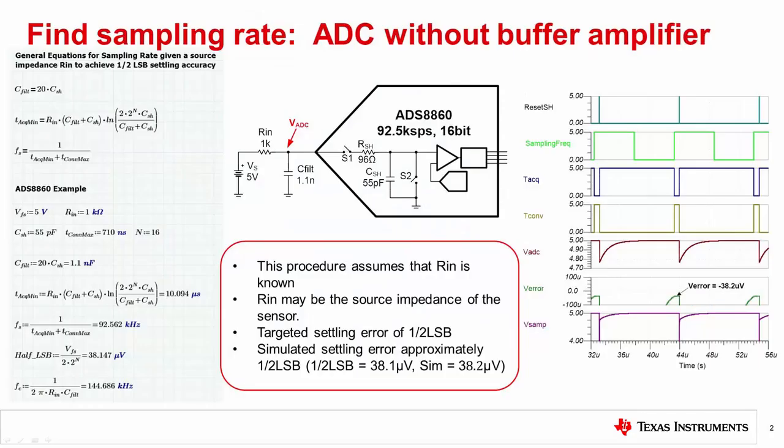Here we show a simple example of how the sampling rate can be selected to achieve good settling error for a SAR ADC without a driver amplifier. Typical use cases for this include monitoring power supply rails or monitoring sensors like thermistors. The source VS is modeled as an ideal DC source. In a practical case, the source may have significant source impedance.